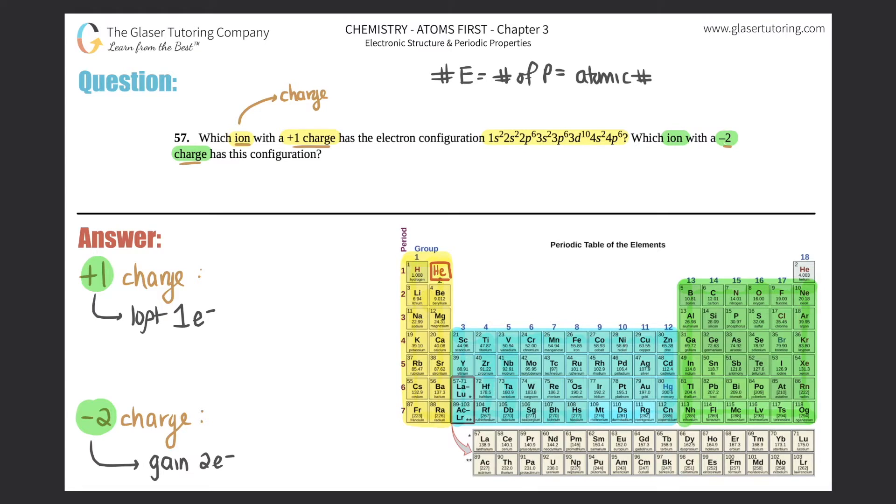We can find a pseudo atomic number. I say pseudo because it's fake—both of these have a charge, so they were manipulated to get this electron configuration.